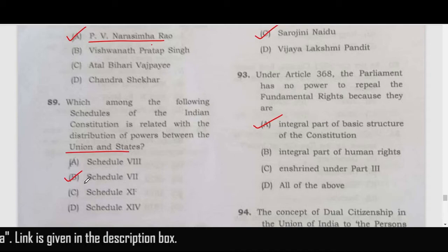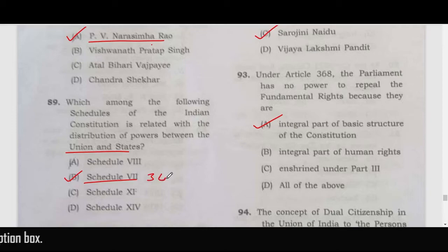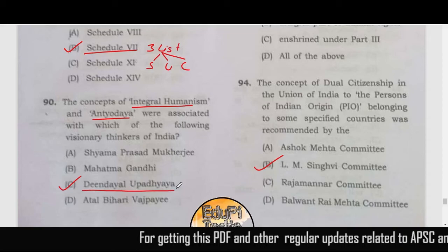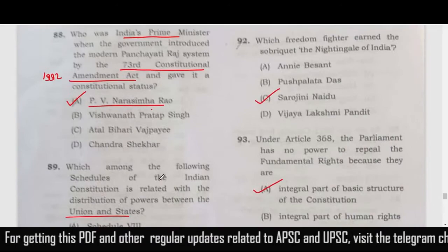Which among the following schedules relates to the separation of powers between the Union and states? It relates to Schedule 7, which has three lists — the State List, the Union List, and the Concurrent List. Question 90: the concept of Integral Humanism and Antyodaya are related to Deen Dayal Upadhyay. There is also a scheme called Deen Dayal Upadhyay Antyodaya Yojana.